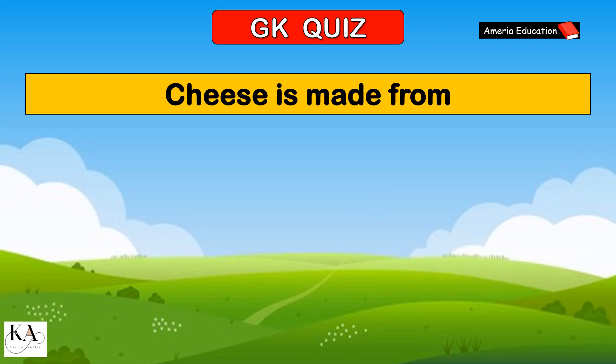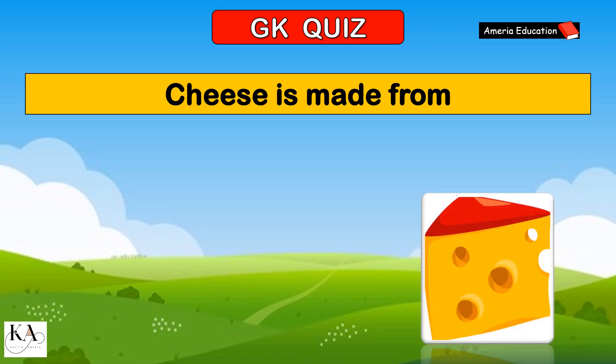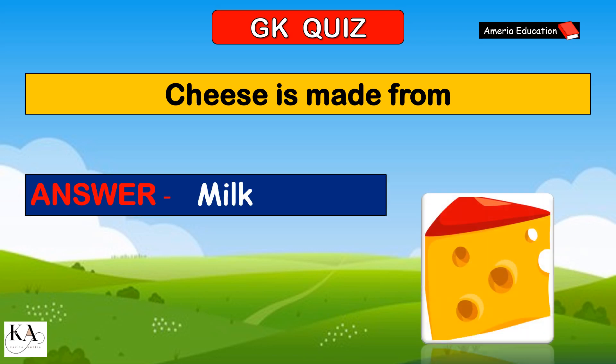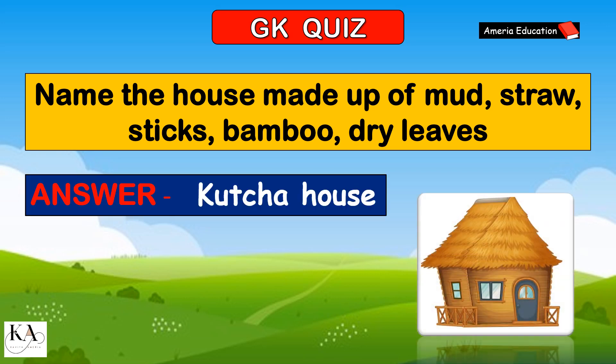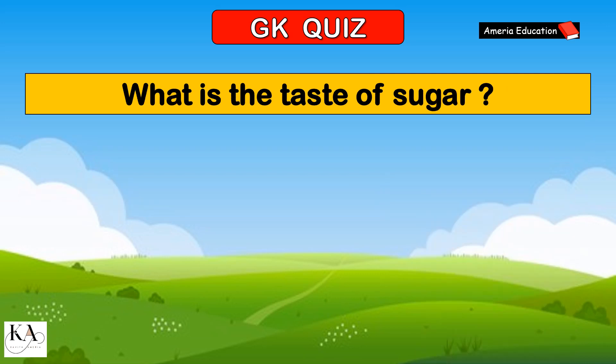What comes after 19? 20. Cheese is made from milk. Name the house made up of mud, straw, sticks, bamboo and dry leaves. Kachcha house.